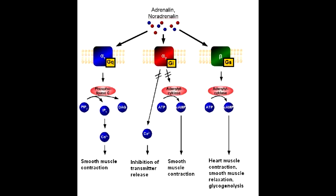The G-protein class of beta-2 receptors is GS. The effects of beta-2 receptor stimulation include vasodilation, bronchodilation, increase in heart rate, increase in contractility, increased lipolysis, increase in insulin release, and decreased uterine tone — which is why these drugs can be used for tocolysis, meaning suppression of premature labor. Beta-2 stimulation also causes ciliary muscle relaxation and increases aqueous humor production.